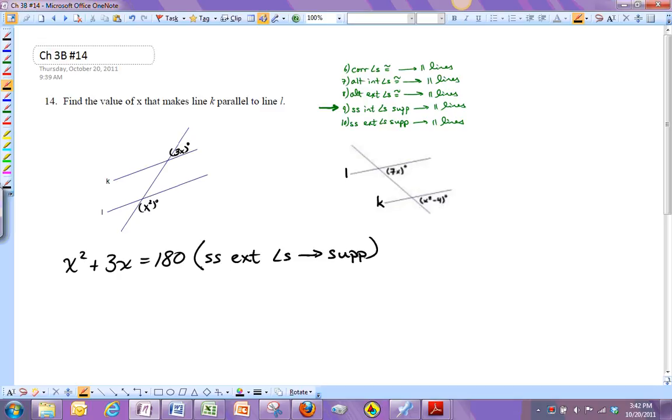Okay, so if I bring the 180 over, I get X squared plus 3X minus 180 equals zero. And then you can do two things. You can either factor it, or you can use quadratic formula.